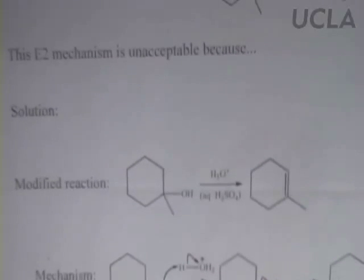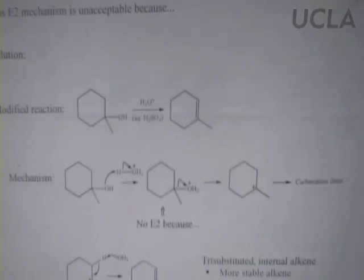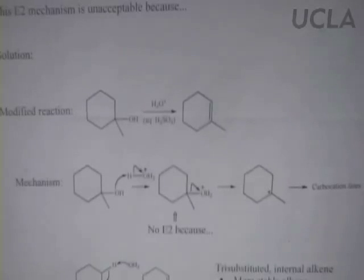The OH by itself is a poor leaving group, but by putting the proton on and converting it to water, water is a better leaving group. It's still not a really great leaving group, but it's okay — it leaves to make the tertiary carbocation. We don't get an E2 version of this, principally because there is no reasonably strong base present. Water is the strongest base here, and it's a lousy base. So we simply ionize that away to make the carbocation, and that is our rate-determining step.